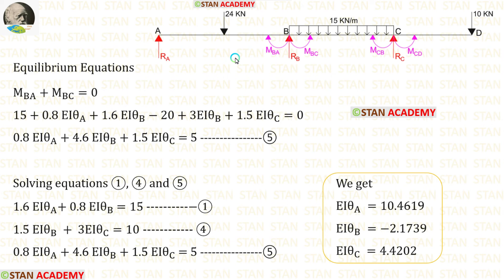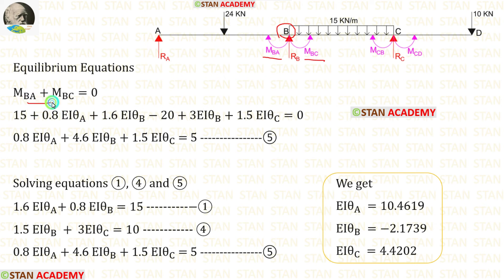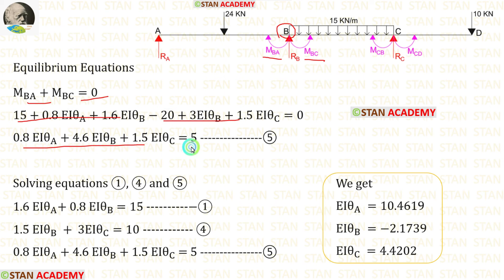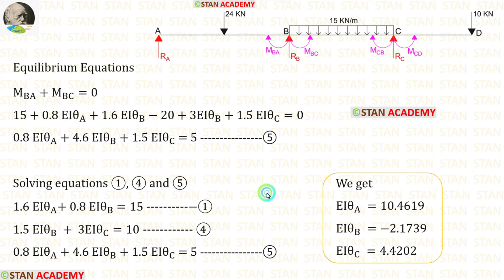We have made two equilibrium equations, but we need 3. The third equilibrium equation is made at joint B, where MBA plus MBC equals 0. We add the slope deflection equations already made for MBA and MBC. After adding them, we obtain the third equilibrium equation.